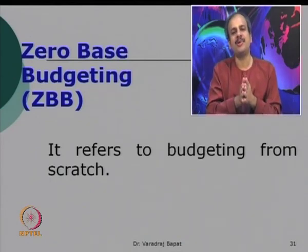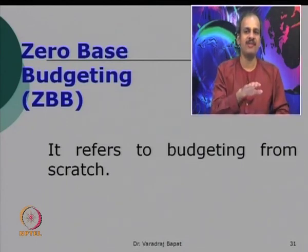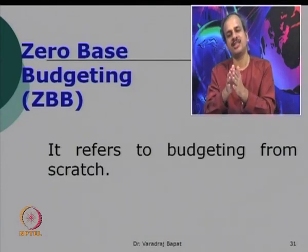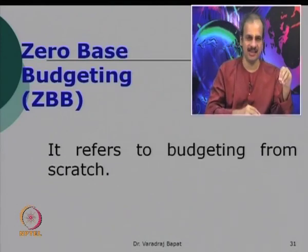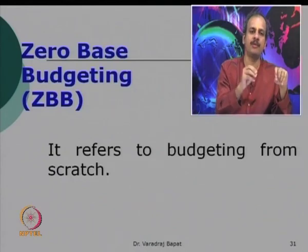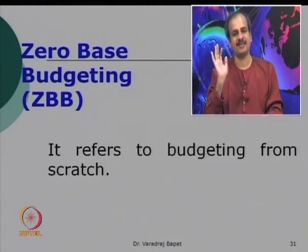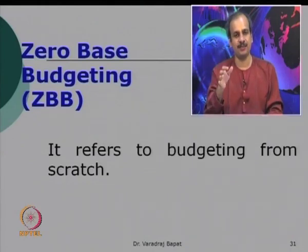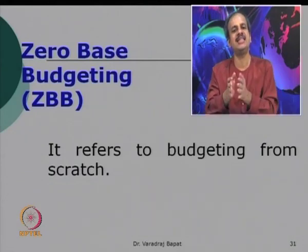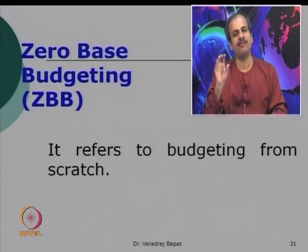Normally what happens is any budget which is prepared is prepared on the basis of last year's budget. So if we have to give a budget for, say, department X, we say that last year this department had spent 15 lakhs and there is an inflation of about 10 percent. So let us this year fix the budget at 16 lakhs or 16.5 lakhs. So last year's budget is usually carried forward, some changes are made, and this year's budget is prepared. This is the traditional practice of making budgets.